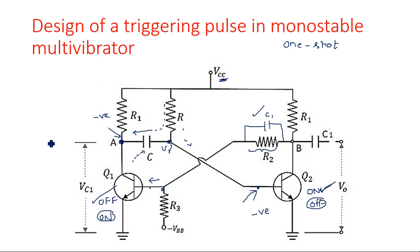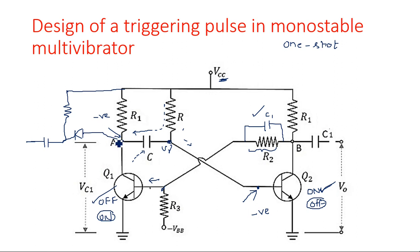We apply this circuit — capacitance R-dash, C-dash, with resistance connected to VCC, followed by a reverse-biased diode — at the input of the collector of Q1 or at the base of Q2. A triggering pulse is applied at the input of this R-dash C-dash differentiator circuit. This is the way to generate and apply a triggering pulse for the monostable multivibrator.